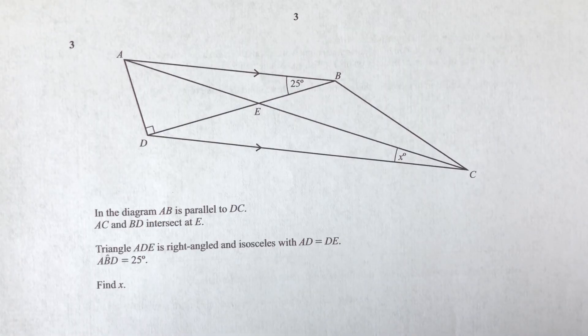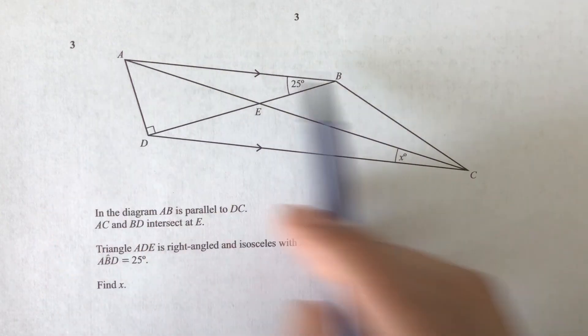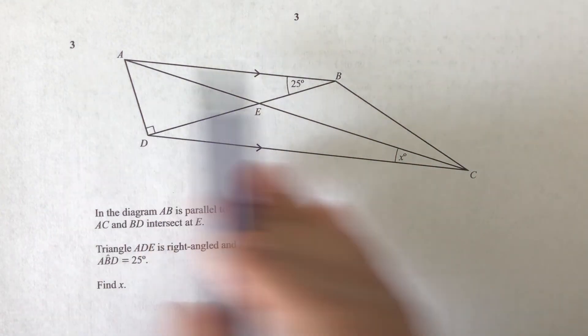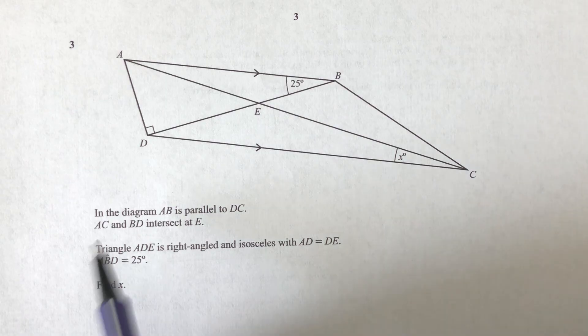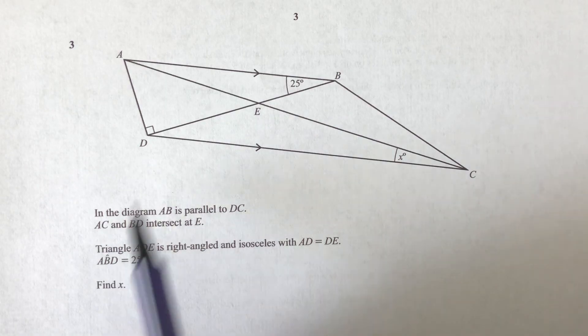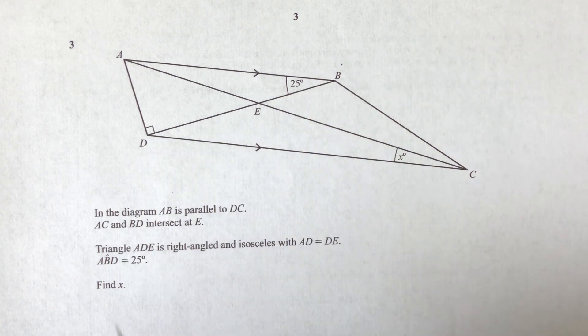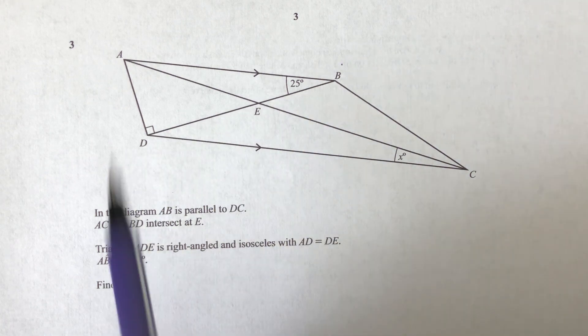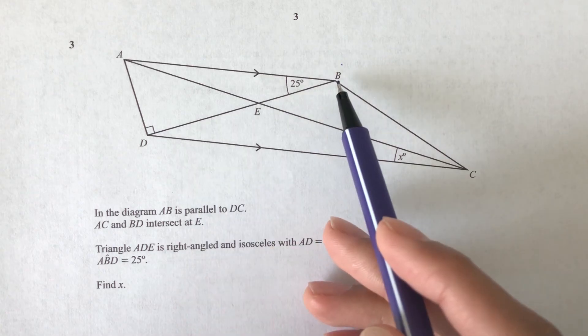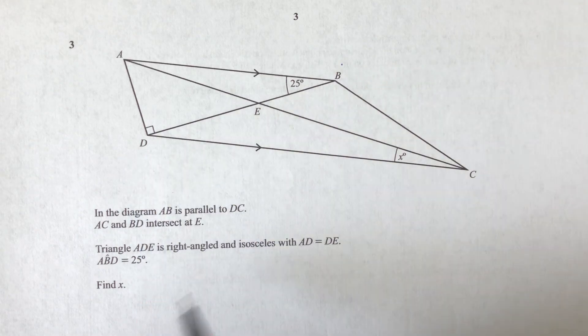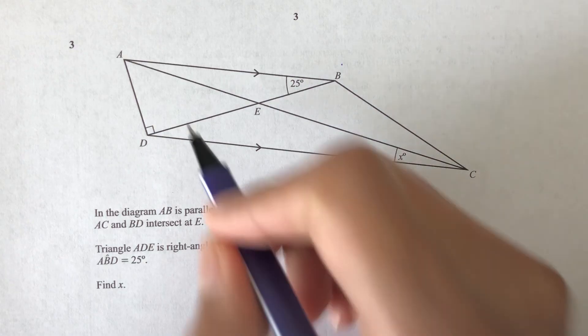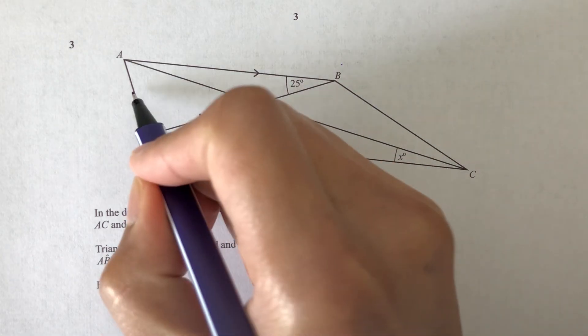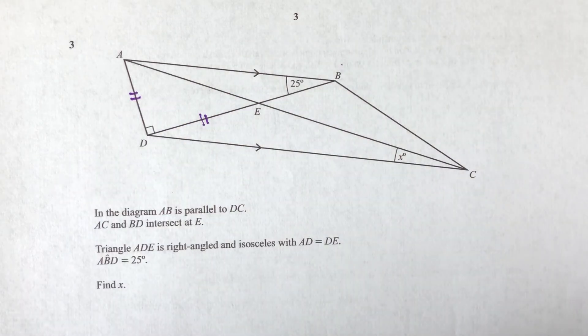Question number 3. In the diagram, we have AB. So AB is here. It's parallel to DC. So these two lines are parallel. So now we have AD, so AC, A to C, intersect with BD, BD at E. Triangle ADE, so ADE is right angled and isosceles with AD equal to DE. So these two sides are the same. Isosceles triangle.